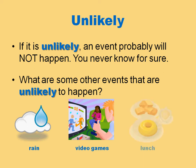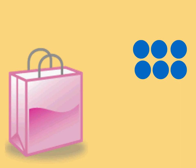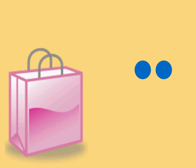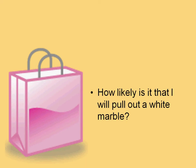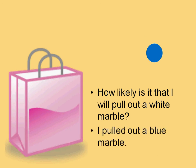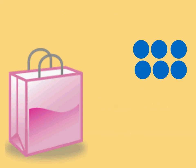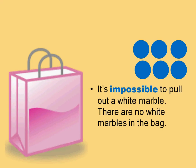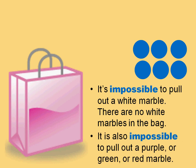Now let's go back to the first example where I have all blue marbles. If I put all of the blue marbles into the bag, how likely is it that I will pull out a white marble? Let me pull out a marble just so you can see. You can see that I pulled out a blue marble. And you know that there are no white marbles in the bag, so there is no way to pull out a white marble. So we say that it is impossible. If I have only six blue marbles, it is impossible to pull out a white marble because there are no white marbles in the bag. It is also impossible to pull out a purple, green, or red marble. We say that it is impossible.